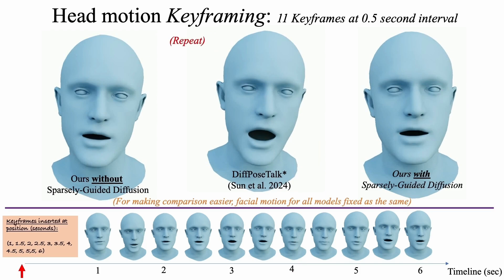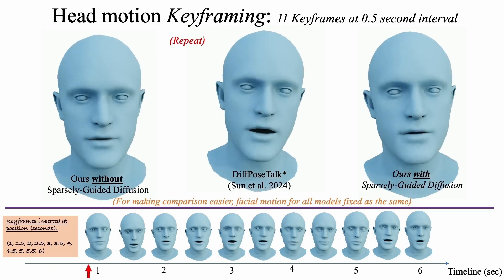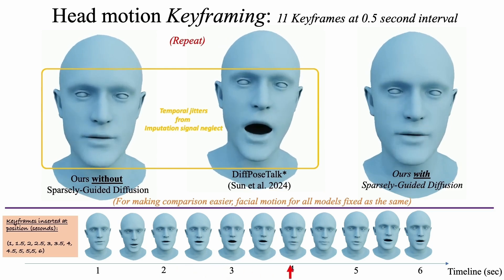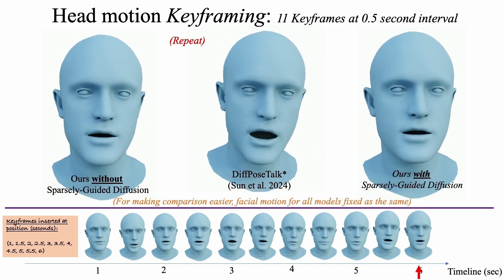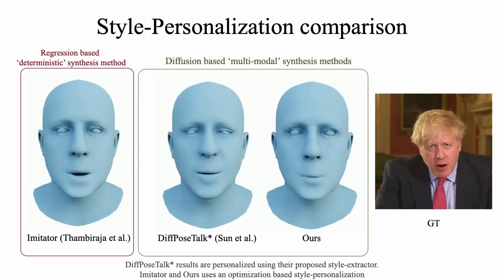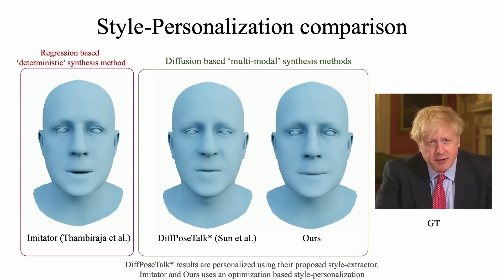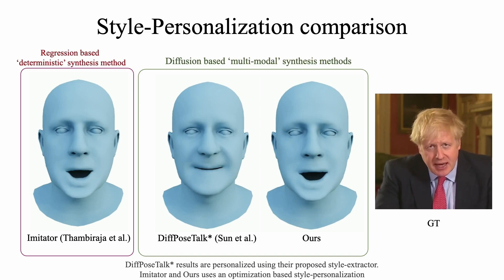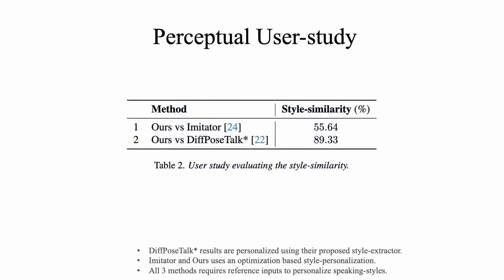Similarly, for head motion keyframing, both standard diffusion and diff post hoc ignore the sparse keyframe input. In contrast, our method is able to embed the keyframes into a new motion sequence that is in sync with the audio. We outperformed diff post hoc and match imitator in terms of personalization, while allowing for editing and diverse synthesis. This was also observed in our perceptual user study, showing that we slightly outperformed imitator and significantly outperformed diff post hoc.